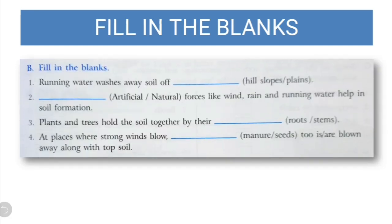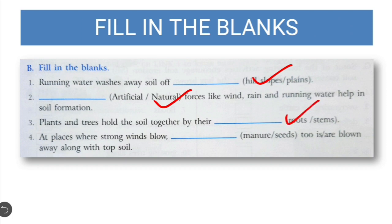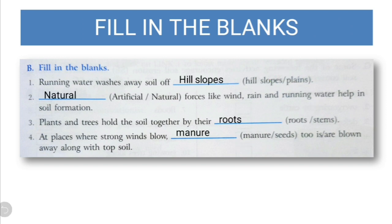Fill in the blanks. Running water washes away the soil of hill slopes or plains — the answer is hill slopes. Dash forces like wind, rain, and running water help in soil formation — the answer is natural. Plants and trees hold the soil together by their roots or stems — the answer is roots. At places where strong winds blow, dash is blown away from the topsoil — the answer is manure. So the answers are: hill slopes, natural, roots, and manure.